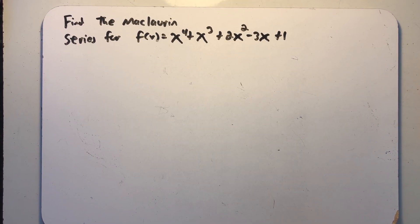We've been asked to find the Maclaurin series for f(x) = x^4 + x^3 + 2x^2 - 3x + 1.